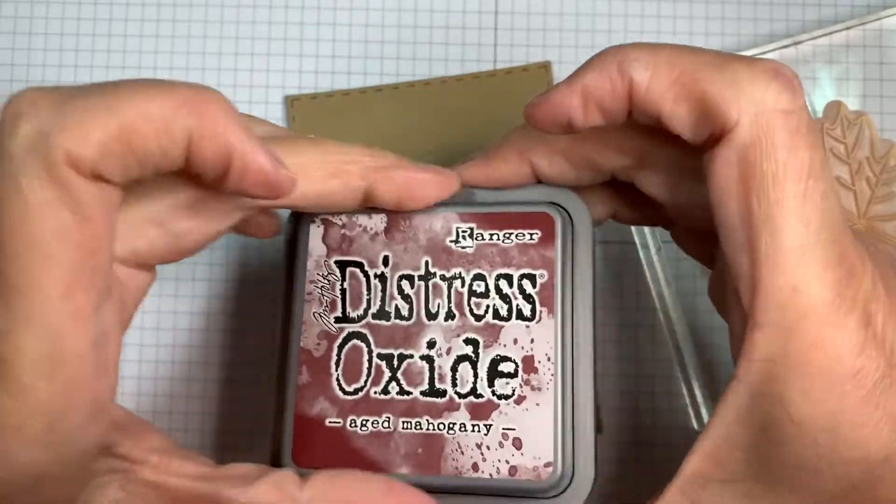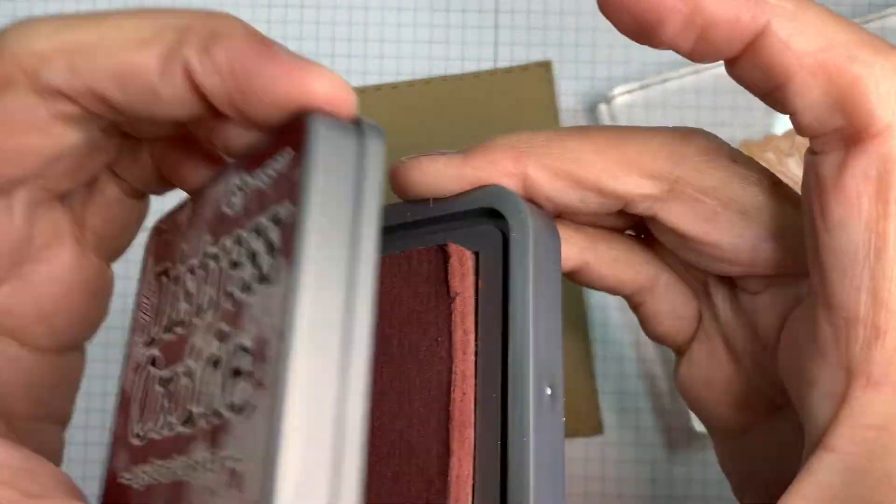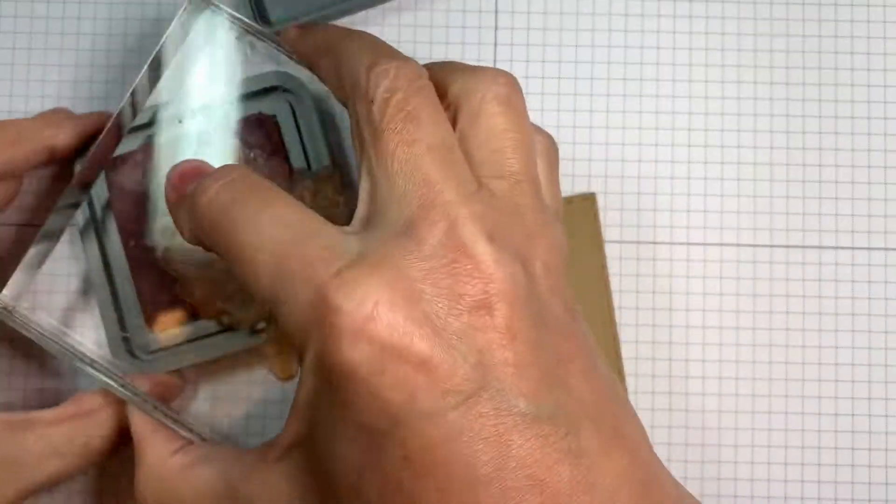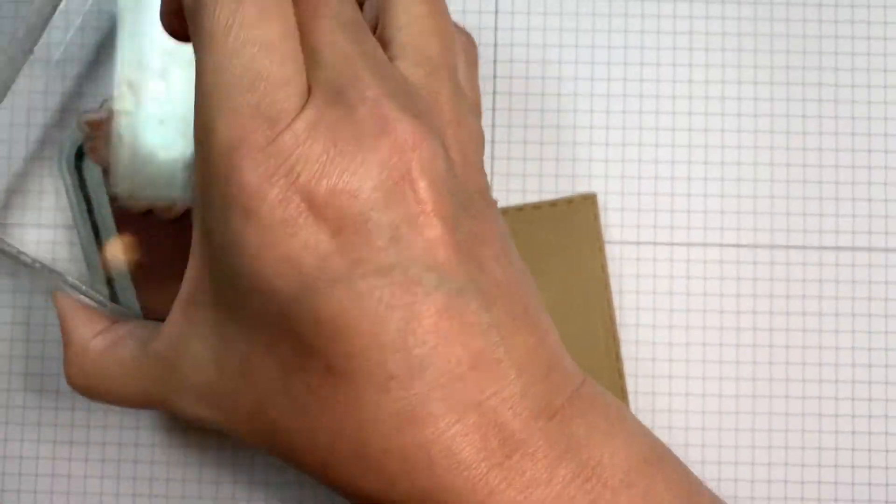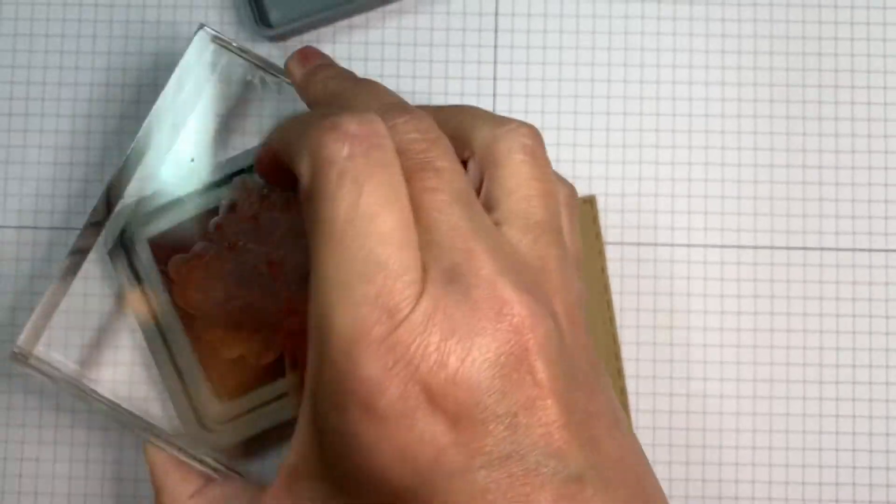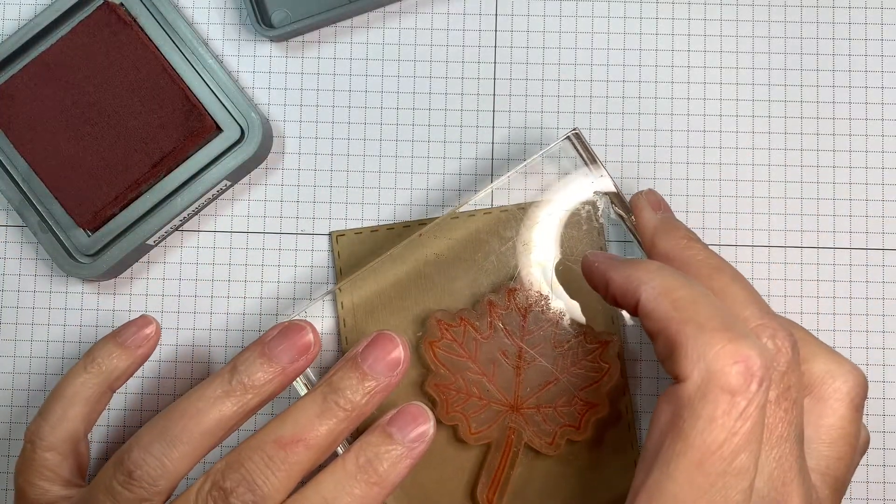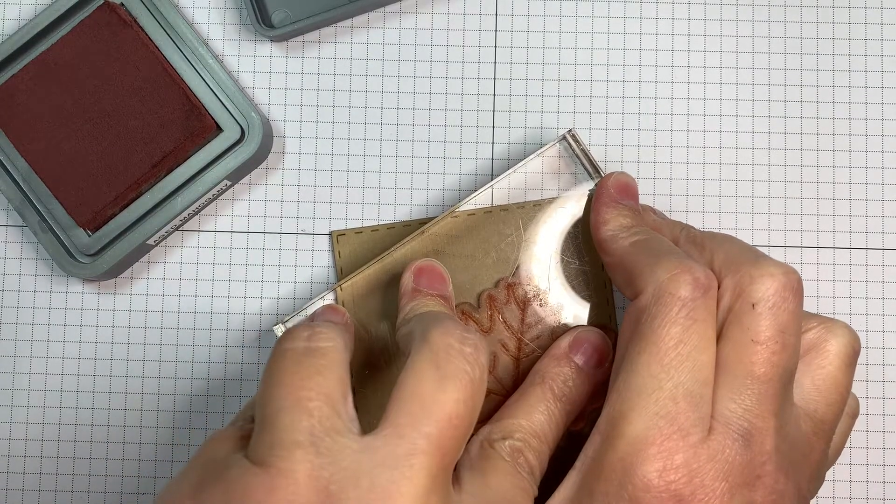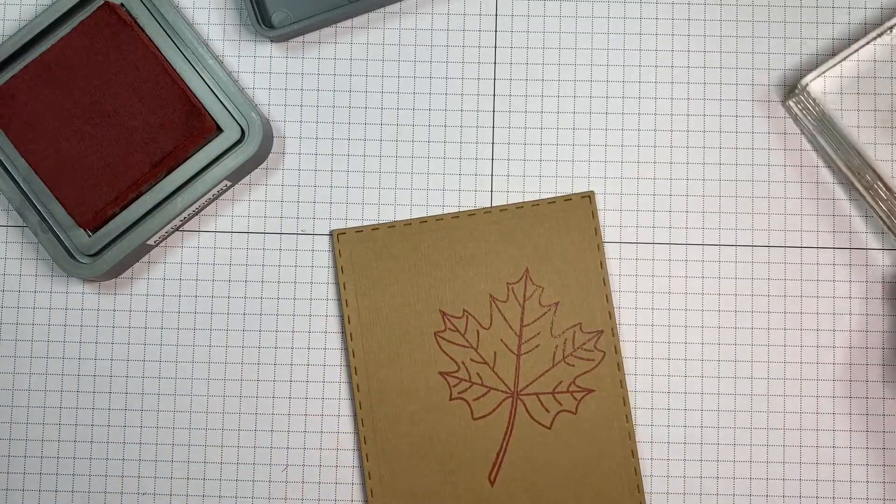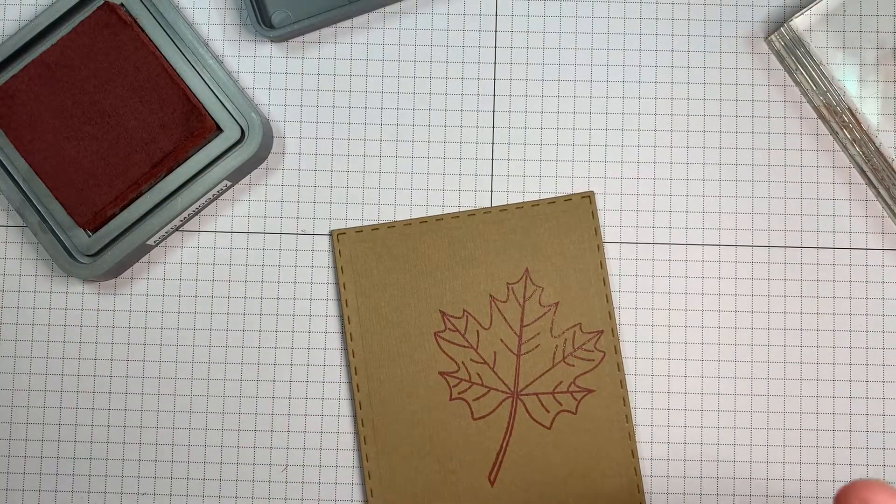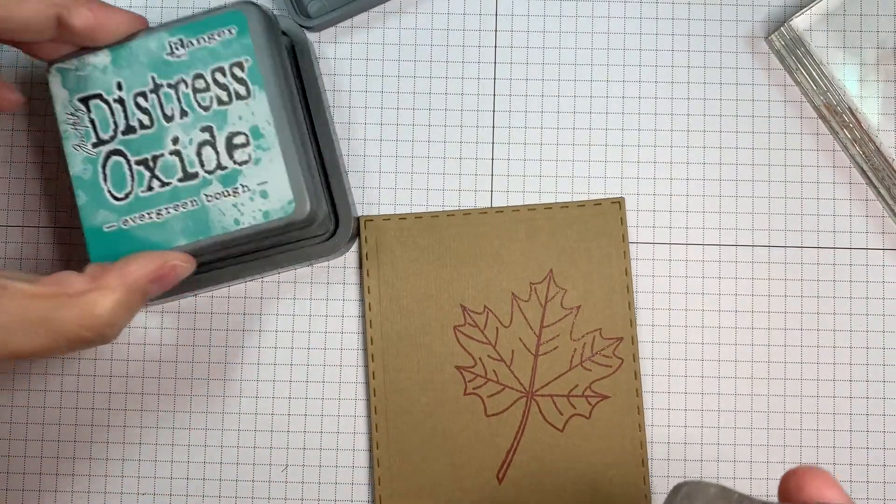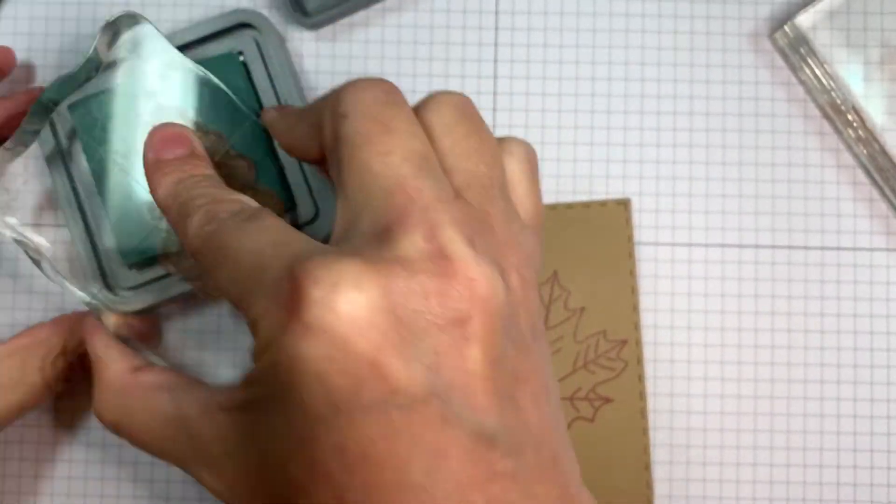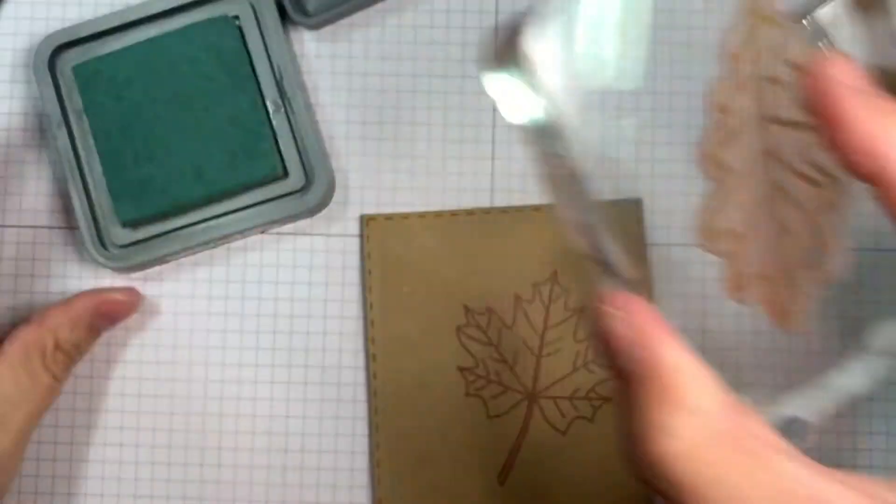I'm making a stamped background. I cut out my rectangle of paper with my Jaded Blossom die and the size was 3 1⁄4 by 4 1⁄2. I'm stamping my leaves, just freehand stamping onto my piece of craft cardstock. Here now I'm using Evergreen Bough and I'm stamping the oak leaf. I'm basically just making a piece of patterned paper.